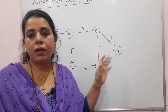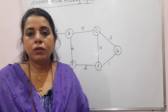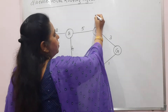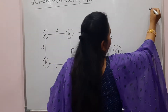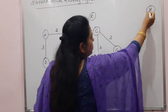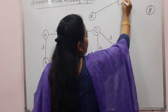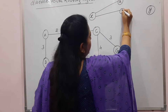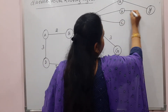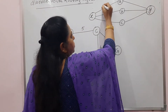Now this distance vector routing algorithm — the heart of this distance vector routing algorithm is the Bellman-Ford equation. So what does the Bellman-Ford equation say? Suppose there is a source node X and another destination node Y, and there are different paths to reach the destination through some intermediate nodes like A, B, C.